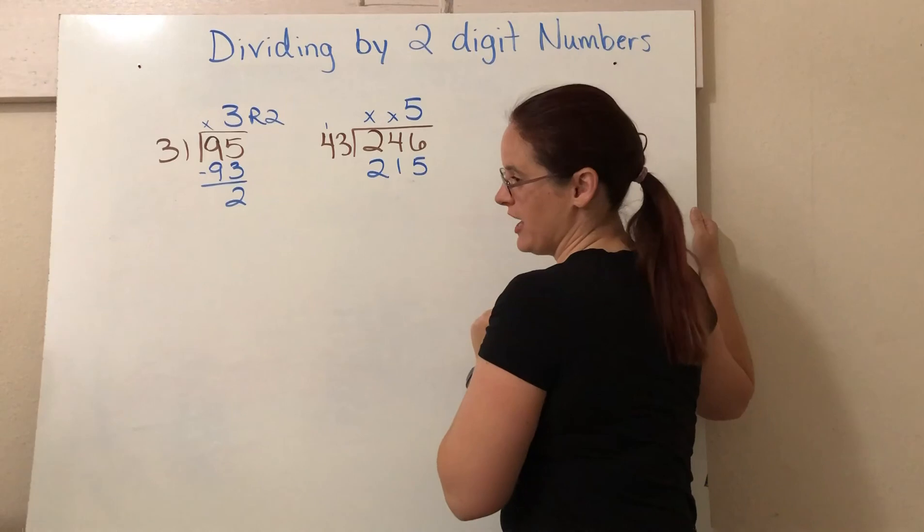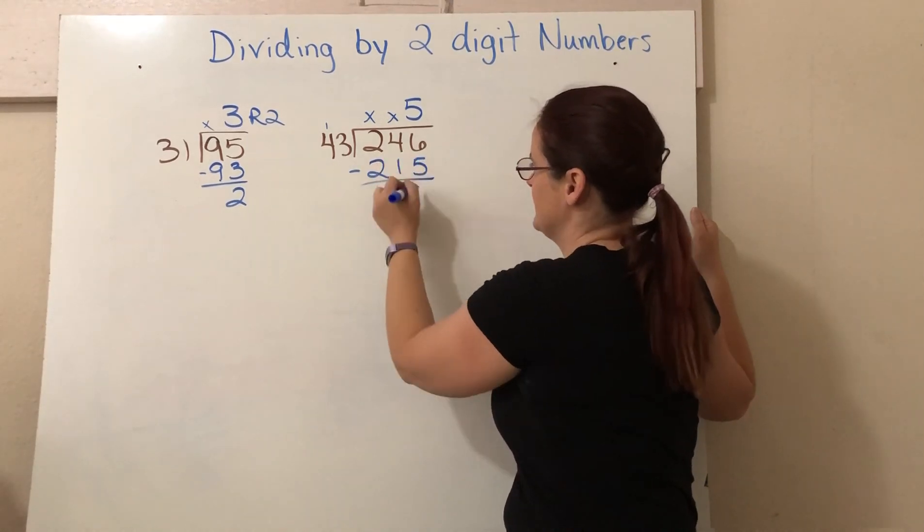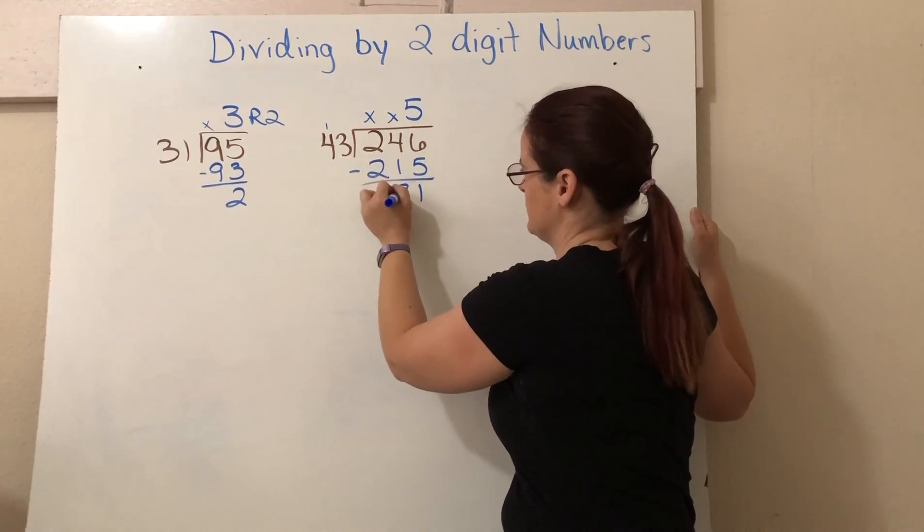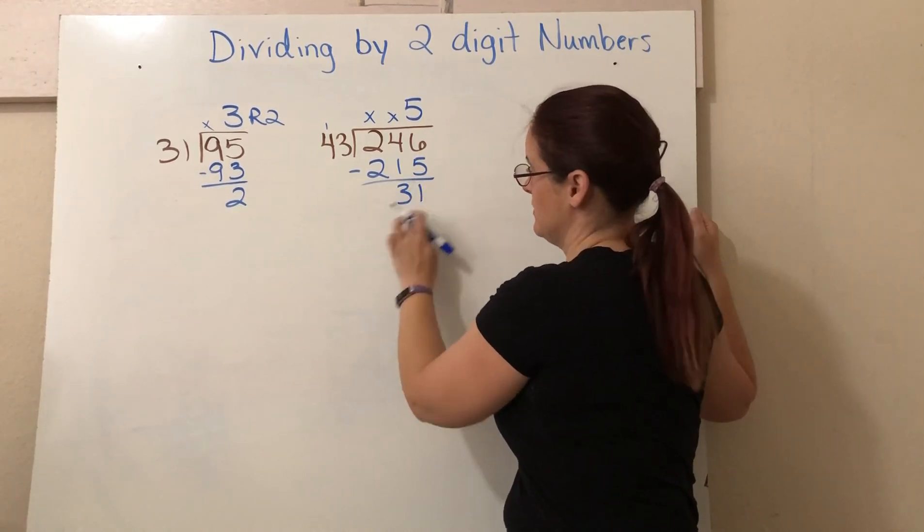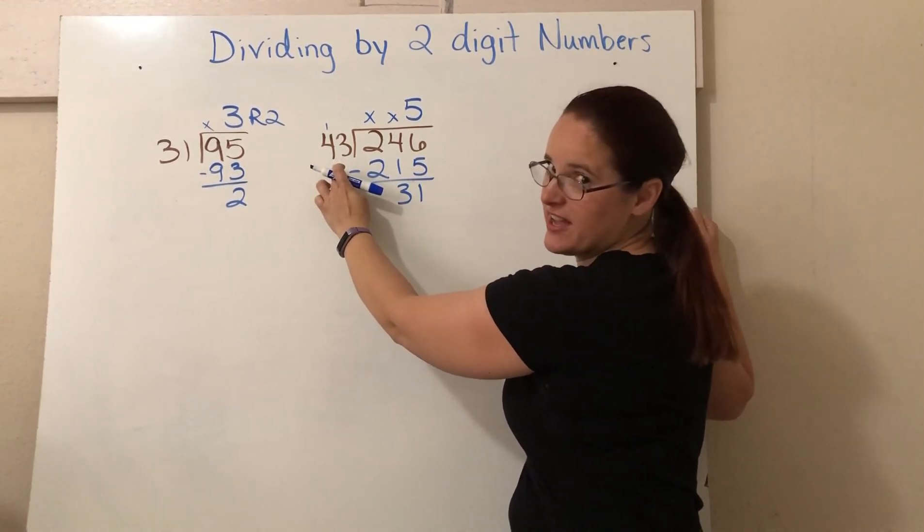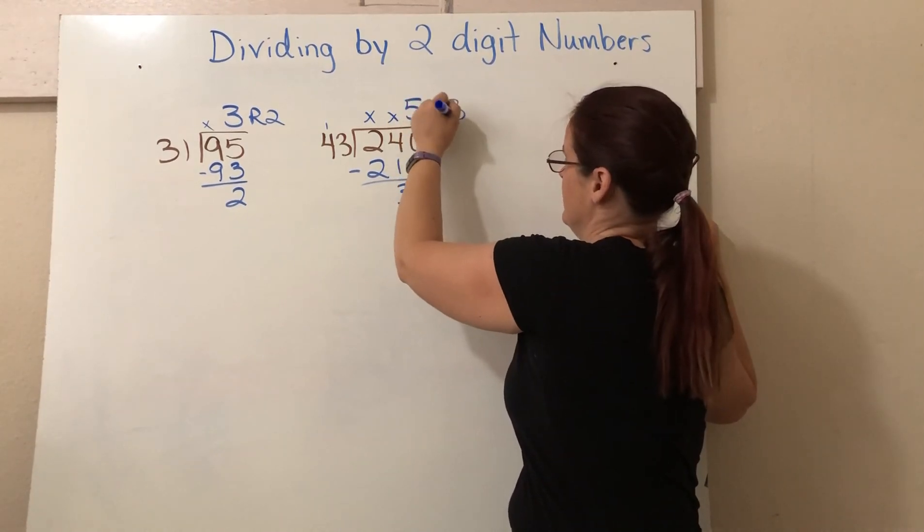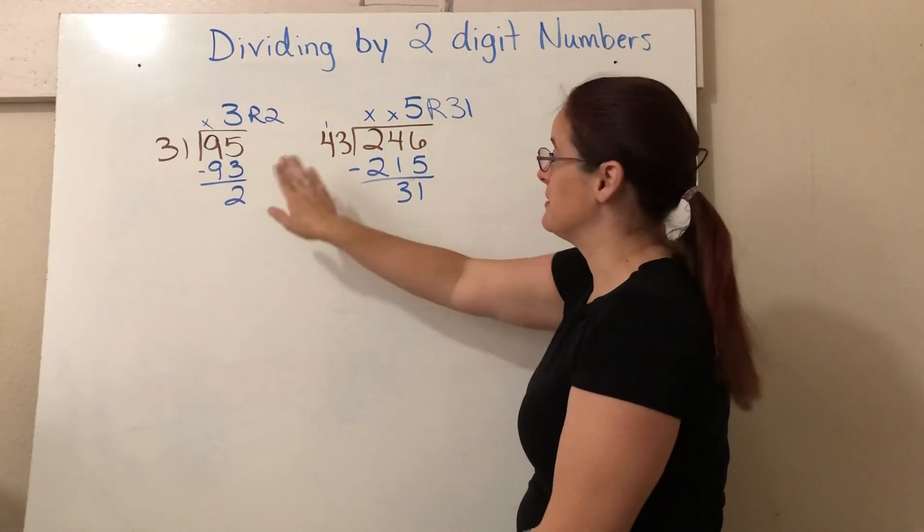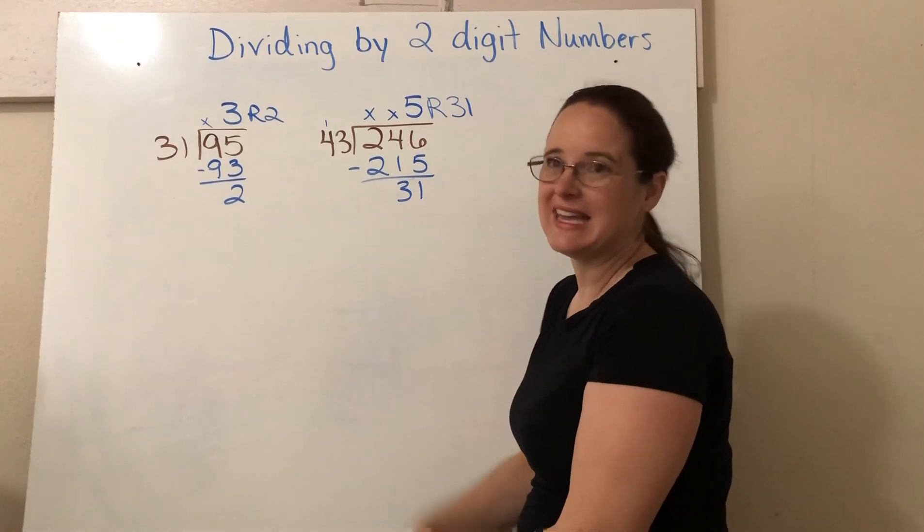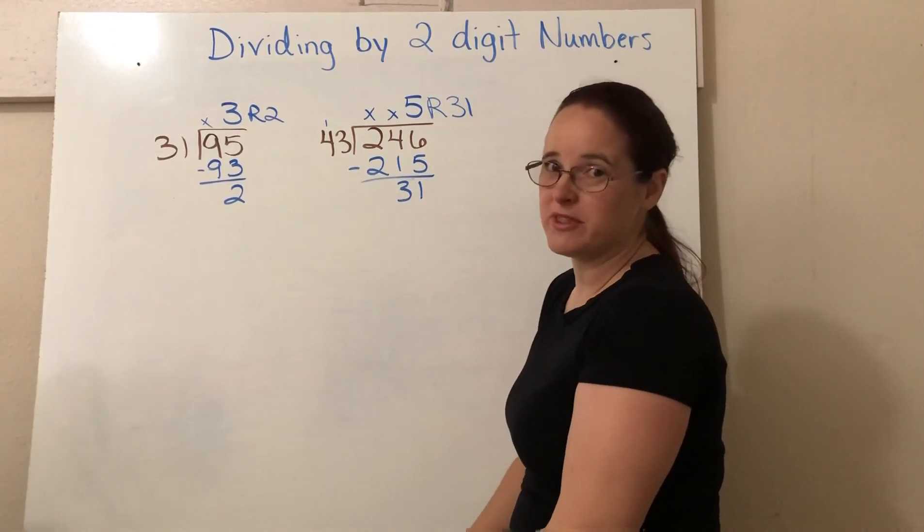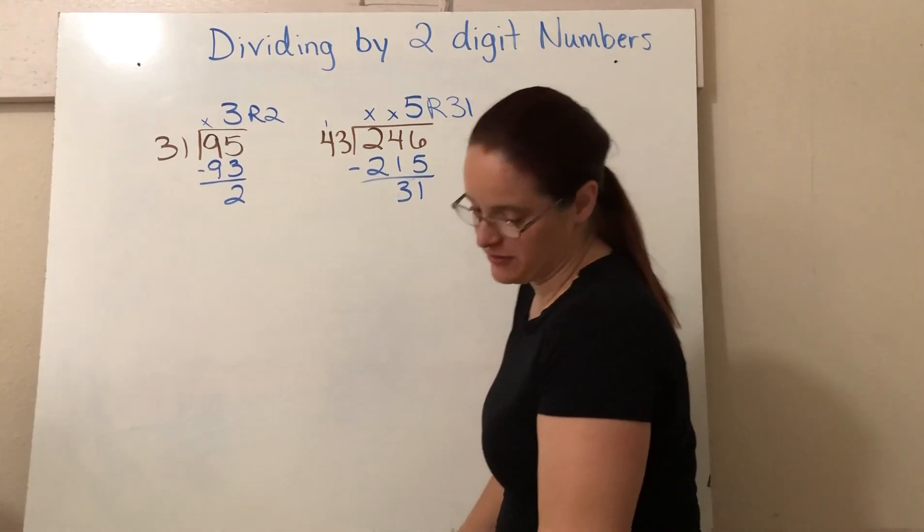And now can I subtract? Yes. Now I can subtract. Six minus five, four minus one. So this remainder is less than my divisor. So it works. That's going to be my remainder. It's a big remainder. But when I'm trying to make groups of 43, sometimes we might end up with a lot of leftovers. Big remainder there.